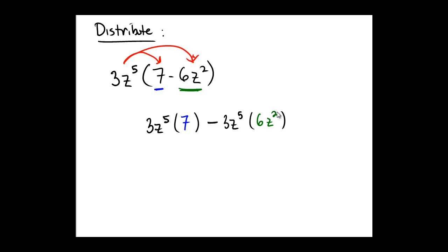So this turns the problem into two products of monomials, which can be simplified via easier techniques here. 3 times 7 is 21z to the power of 5, subtracted by 3 times 6, which is 18.